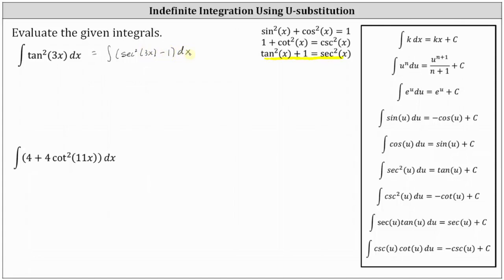Now to integrate secant squared 3x, we'll have to perform u substitution. Since we don't have to perform u substitution to integrate one dx, let's write this as two separate integrals: the integral of secant squared 3x dx, which requires u substitution, minus the integral of one dx, which does not require u substitution.